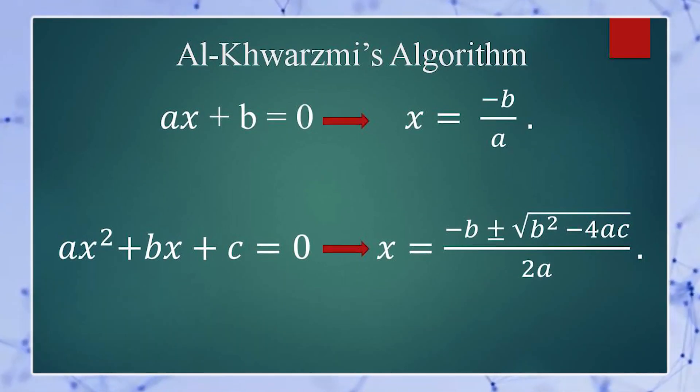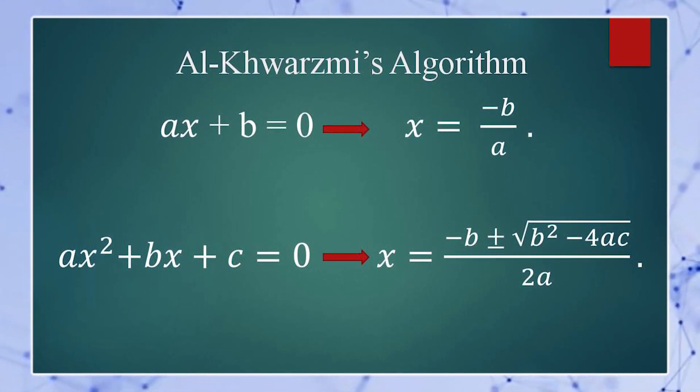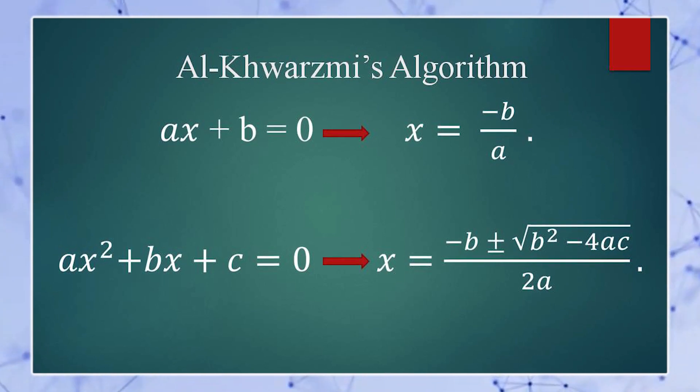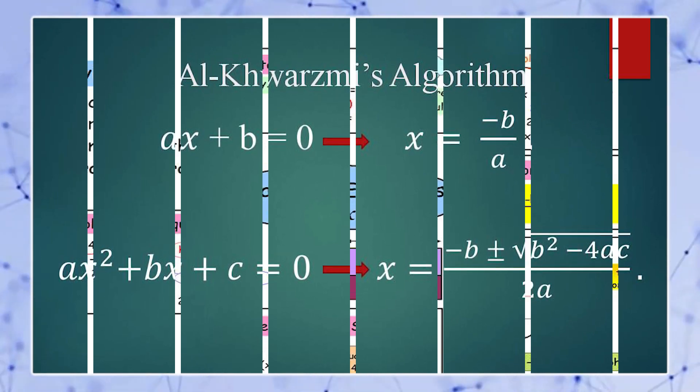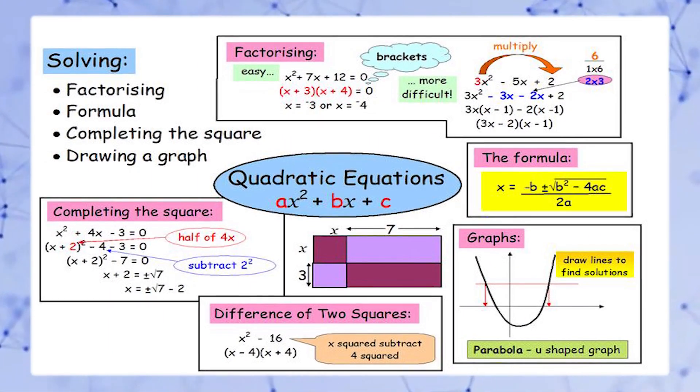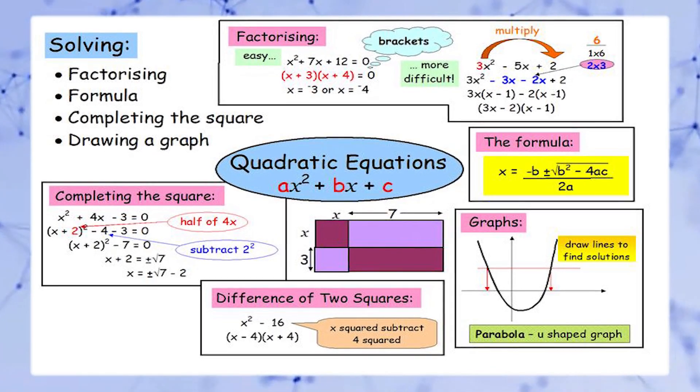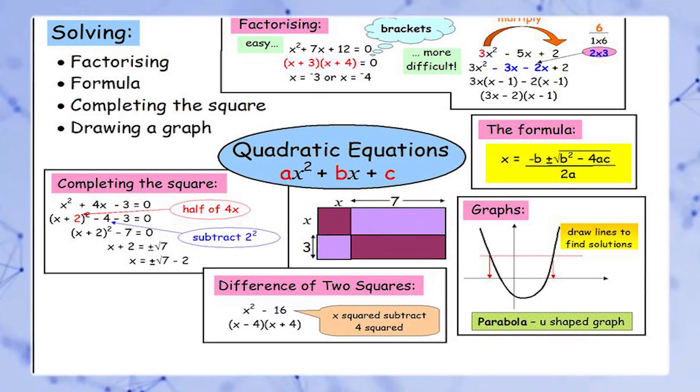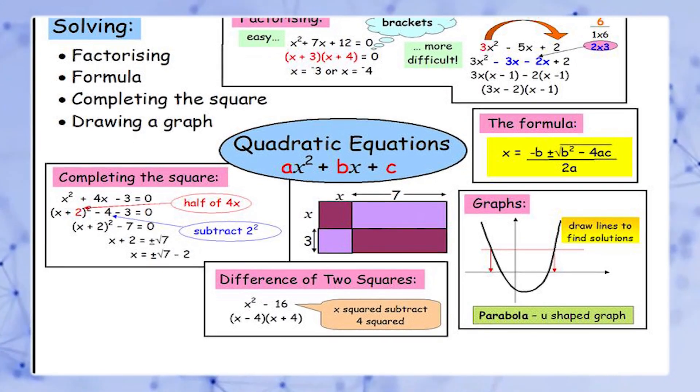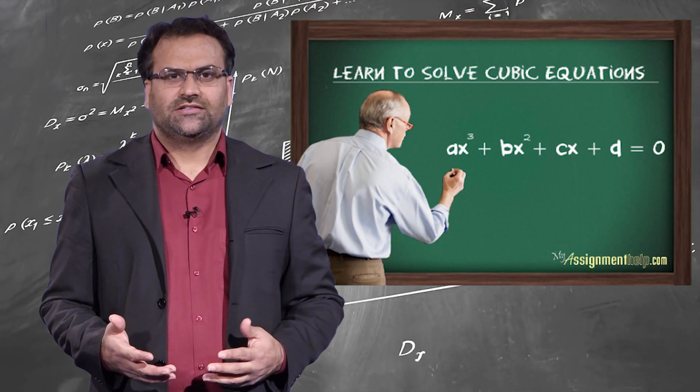In his book of algebra, Al-Khwarizmi described a general method or algorithm to solve linear and quadratic equations. Different methods of algebra to solve quadratic equations are taught in school such as factorization, formula, completing the square, and drawing a graph.